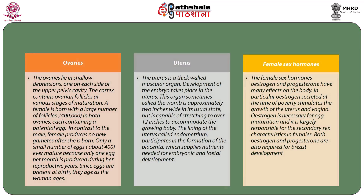The ovaries lie in a shallow depression, one on each side of the upper pelvic cavity. The cortex contains ovarian follicles at various stages of maturation. A female is born with a large number of follicles — nearly 4 lakh in both ovaries — each containing a potential egg. In contrast to the male, the female produces no new gametes after she is born. Only about 400 eggs ever mature, because a female produces only one egg per month during her reproductive years. Since eggs are present at birth, they age as the woman ages.